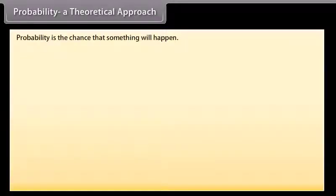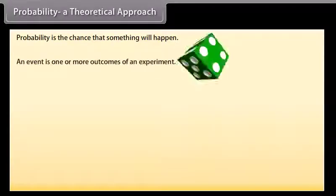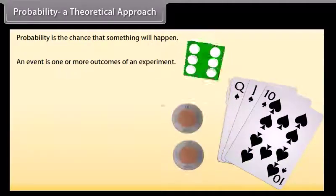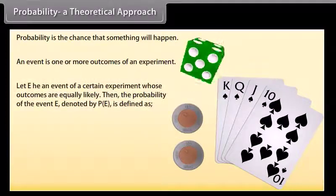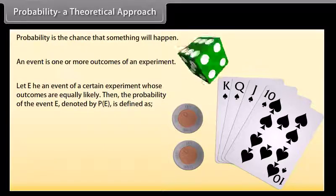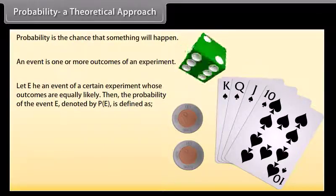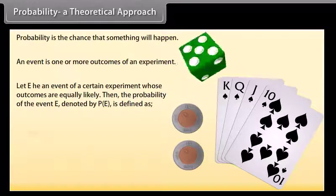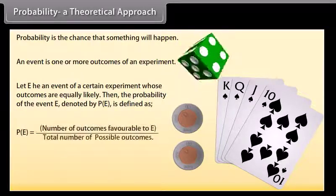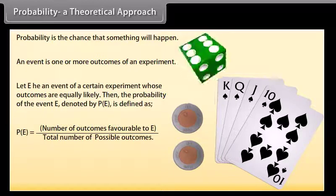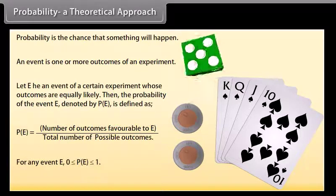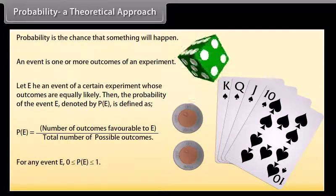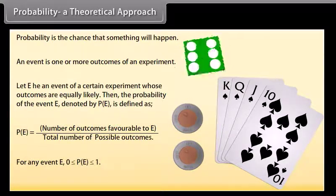Probability — a theoretical approach. Probability is the chance that something will happen. An event is one or more outcomes of an experiment. Let E be an event of a certain experiment whose outcomes are equally likely. Then the probability of event E, denoted P(E), is defined as: P(E) = number of outcomes favourable to E divided by total number of possible outcomes. For any event E, 0 ≤ P(E) ≤ 1.